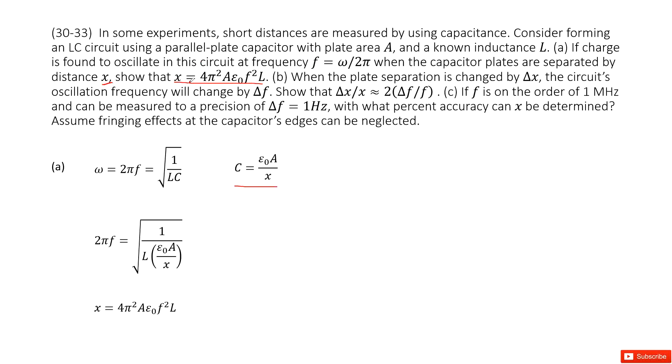In this equation, you can see x and A are there, and also we have frequency f and L inductance. So it looks like we can start from the frequency of the LC circuit. Normally, the frequency of LC circuit we can write it there.